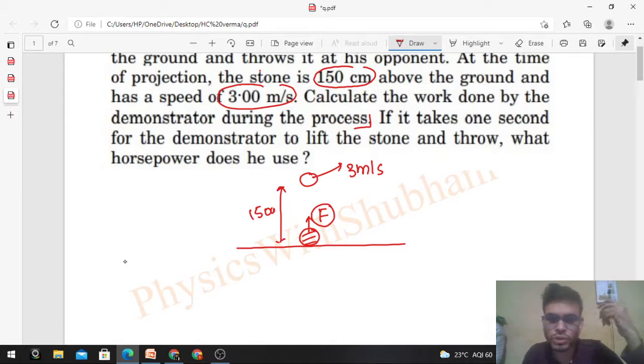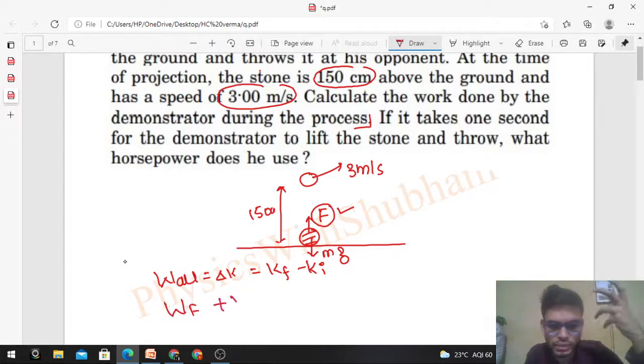If we apply the work-energy theorem, it says work done by all forces equals change in kinetic energy, which is final kinetic energy minus initial kinetic energy. How many forces are acting on this stone? There's an external force F applied by the demonstrator, and there's one more force, which is the weight of the stone mg acting vertically downward. So work done by F plus work done by mg equals change in kinetic energy.